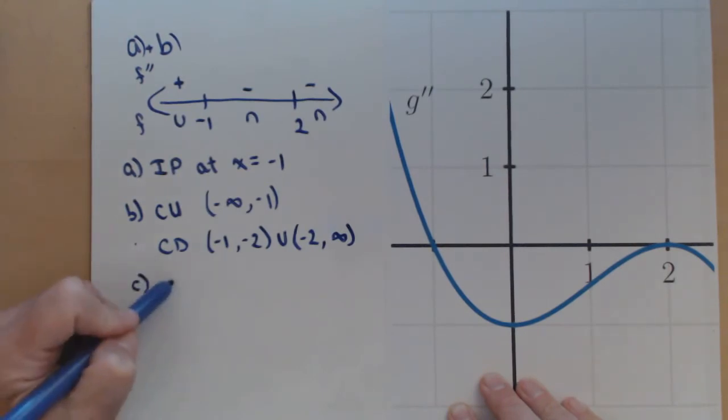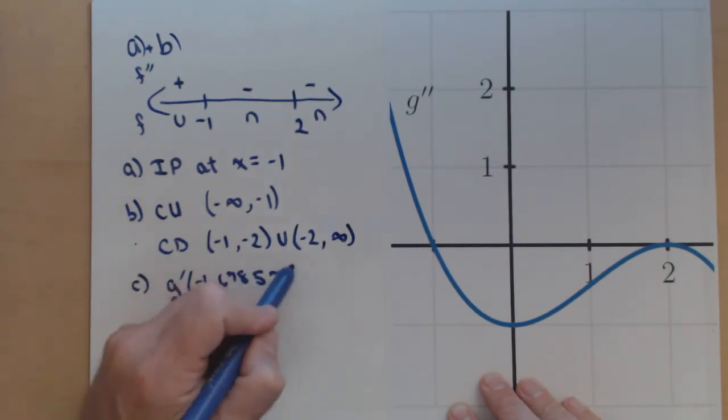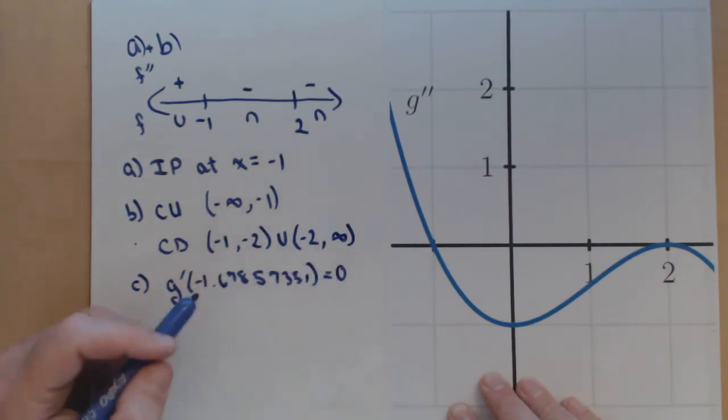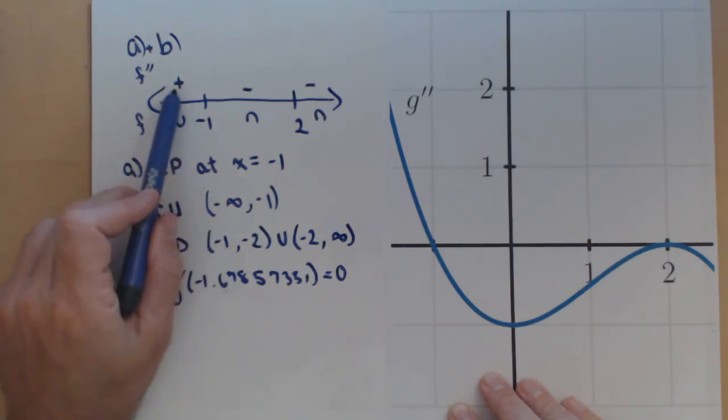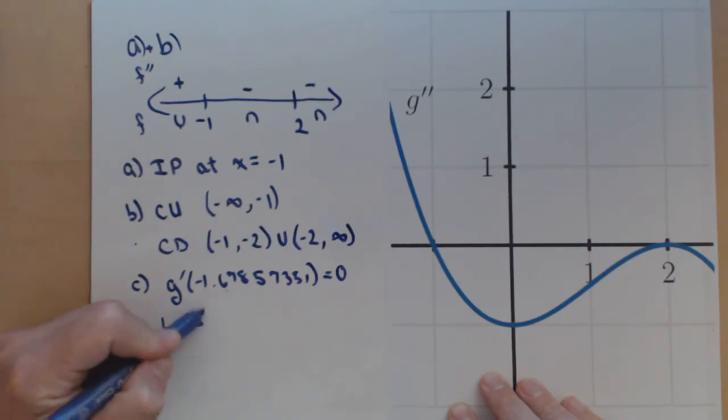Suppose that we're given that g prime of negative 1.67857351 equals 0 and we want to identify if it's a min or a max. Notice, plug it in. For negative 1.657, our graph is concave up, so that means it would sit at the bottom of our u. So it would be a local min by our second derivative test.